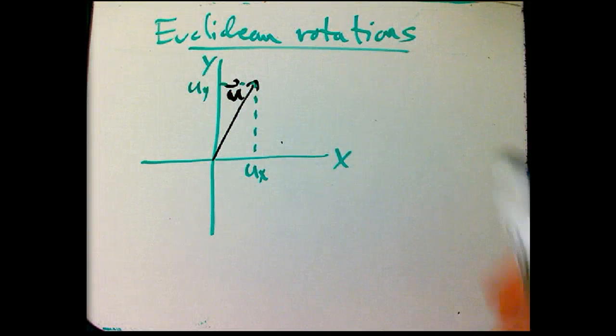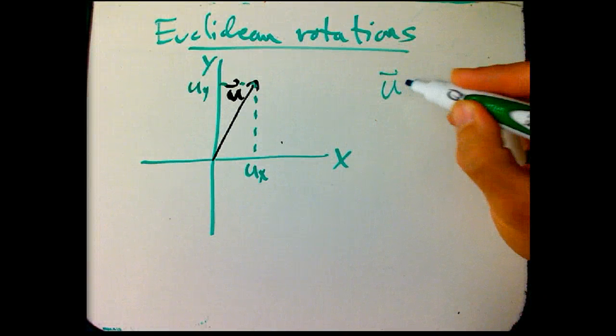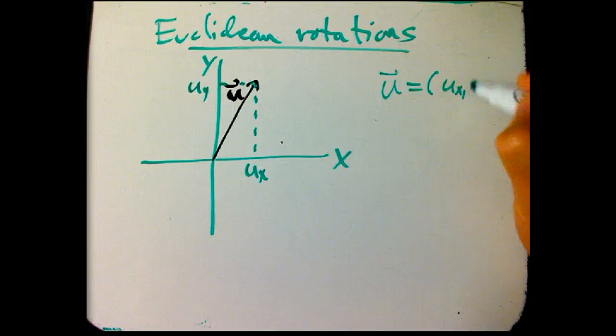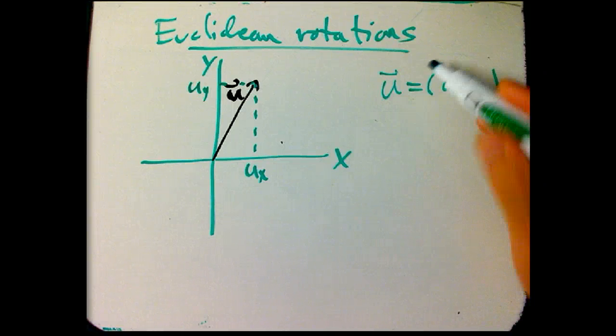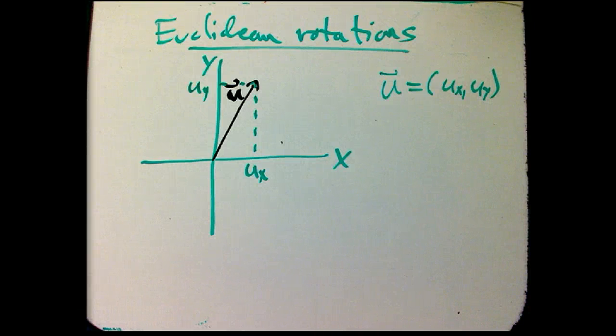And we can express that, we can project that into UX and UY, its components. Okay, and so we're going to write, we're going to think of XY as sort of the preferred coordinate system, and we're going to write U equals UX, UY, although it really should say, the expression of this vector in these coordinates gives you this coordinate, this pair of coordinates, to be more careful.